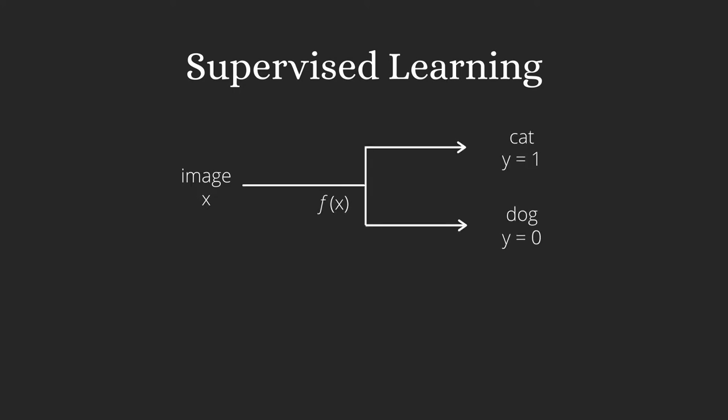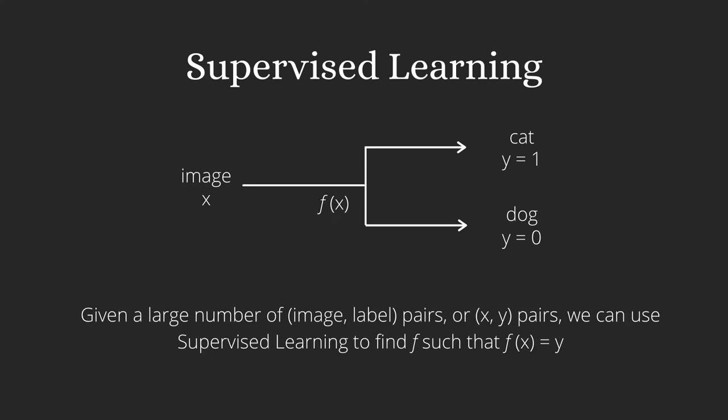Let's consider an example where given an image as input x, the computer has to classify it as either a dog where y equals 0, or a cat where y equals 1. So given a large number of images of dogs and cats and the corresponding labels, which is the value of y for each image, then using supervised learning we can obtain a function f which will classify unseen images of these pet animals as either cats or dogs.